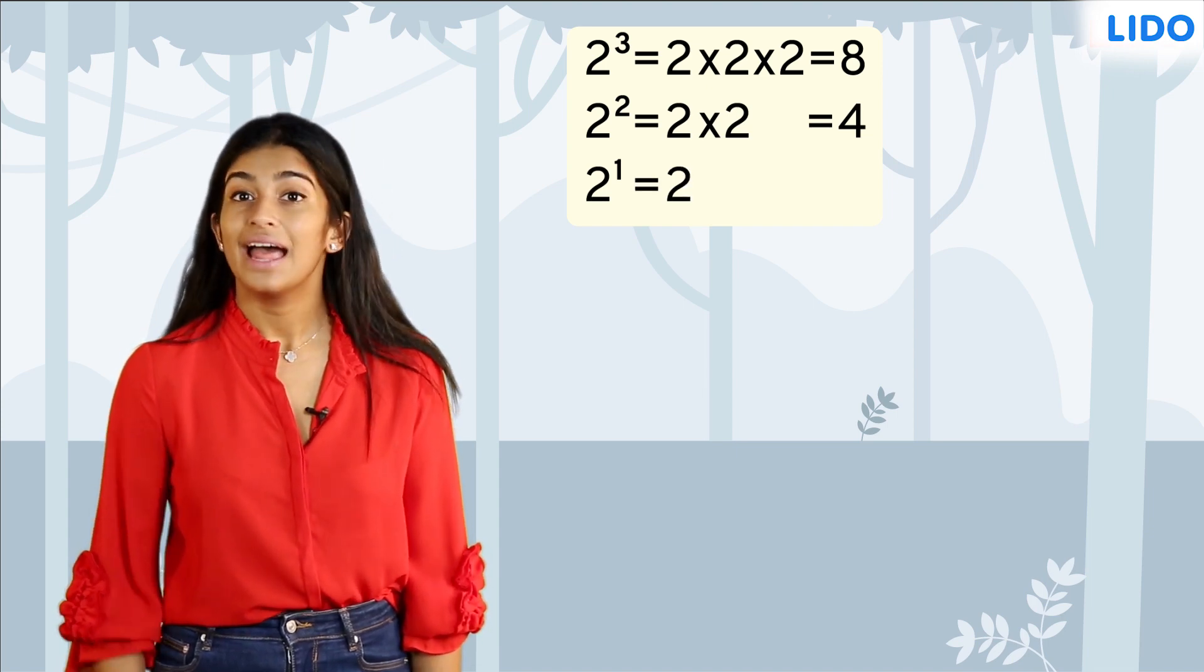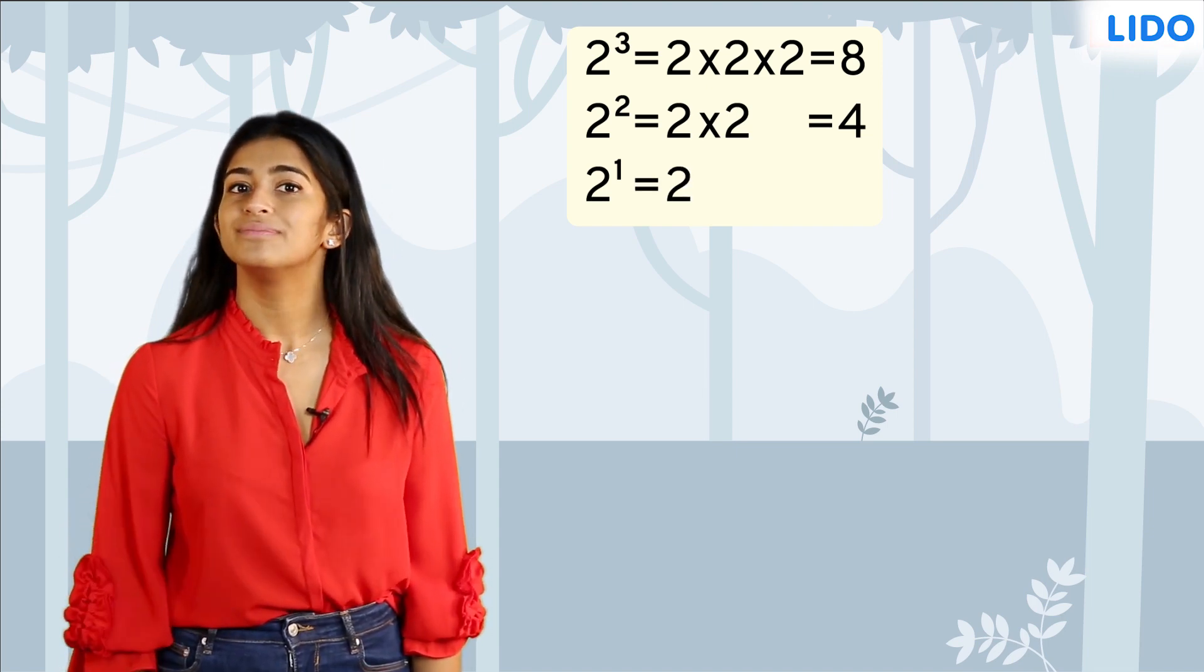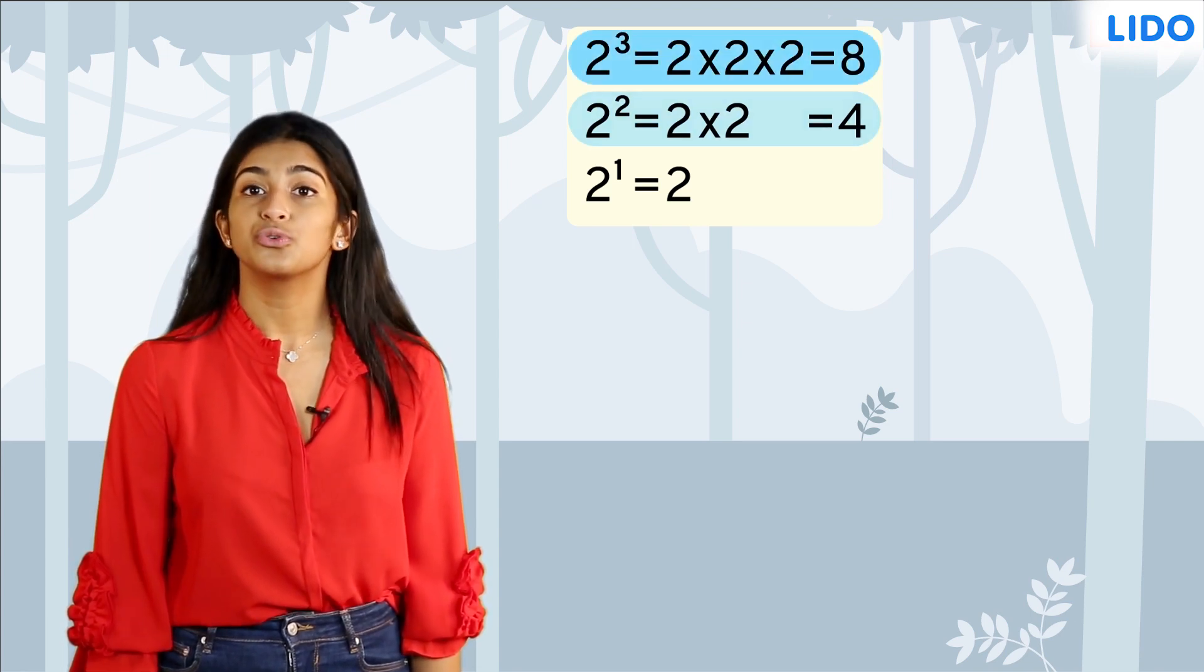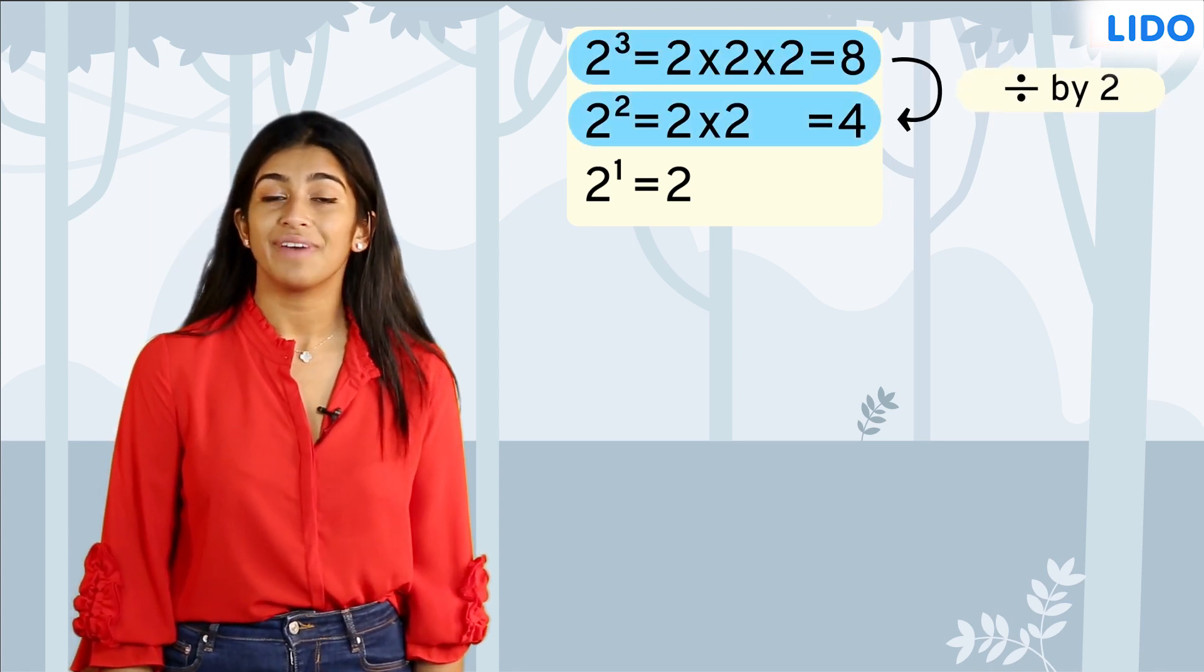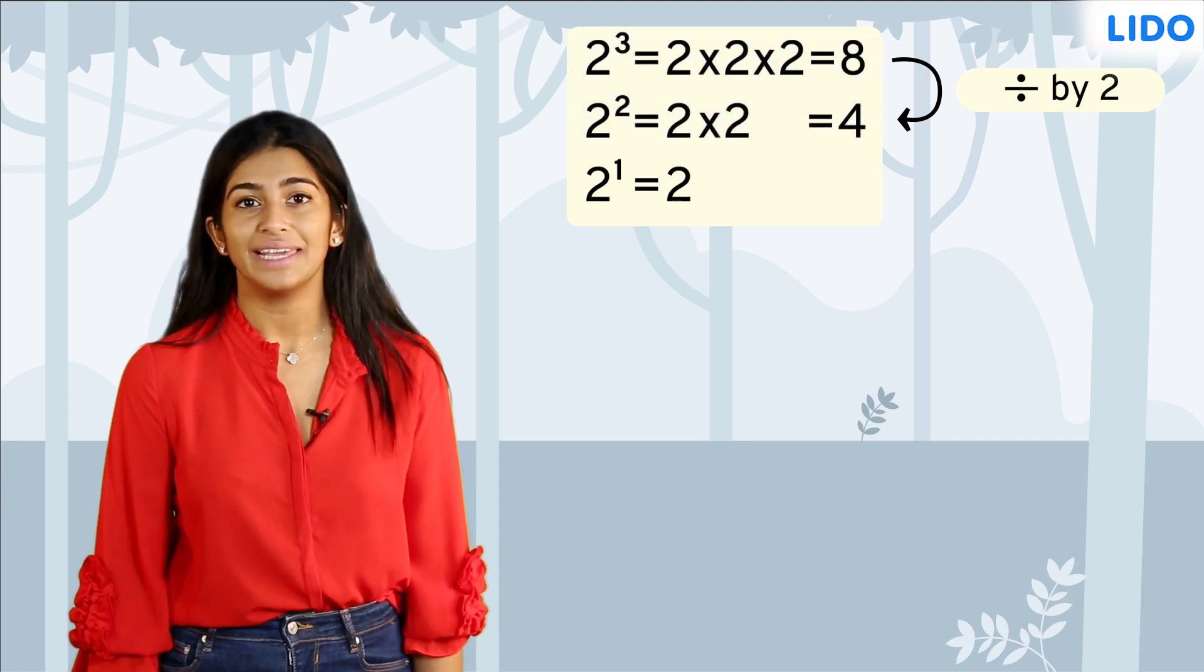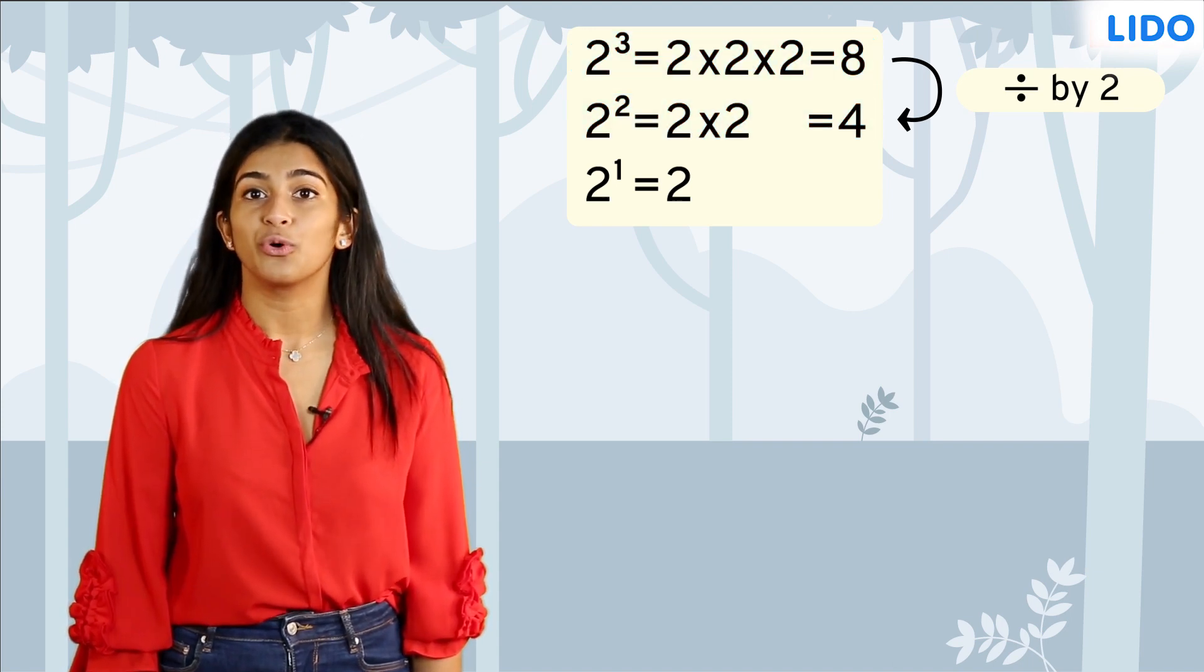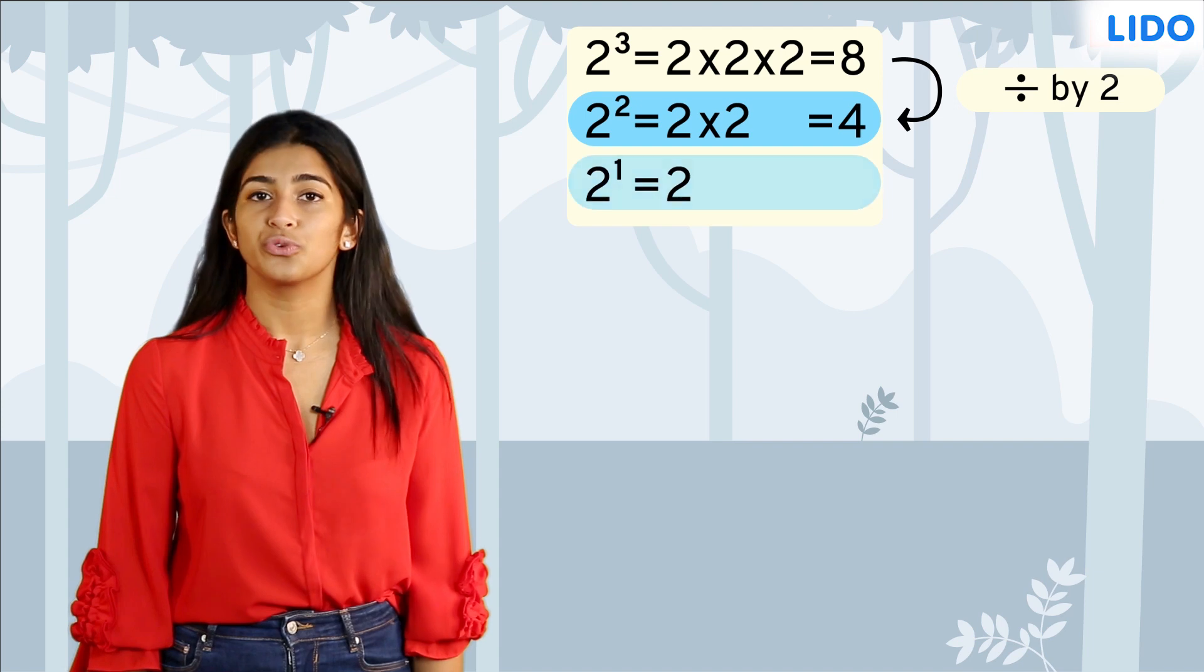If you notice carefully, there is a pattern being formed here. To go from 2 raised to 3 to 2 raised to 2, we will have to divide by 2. Similarly, we divide by 2 to go from 2 raised to 2 to 2 raised to 1.